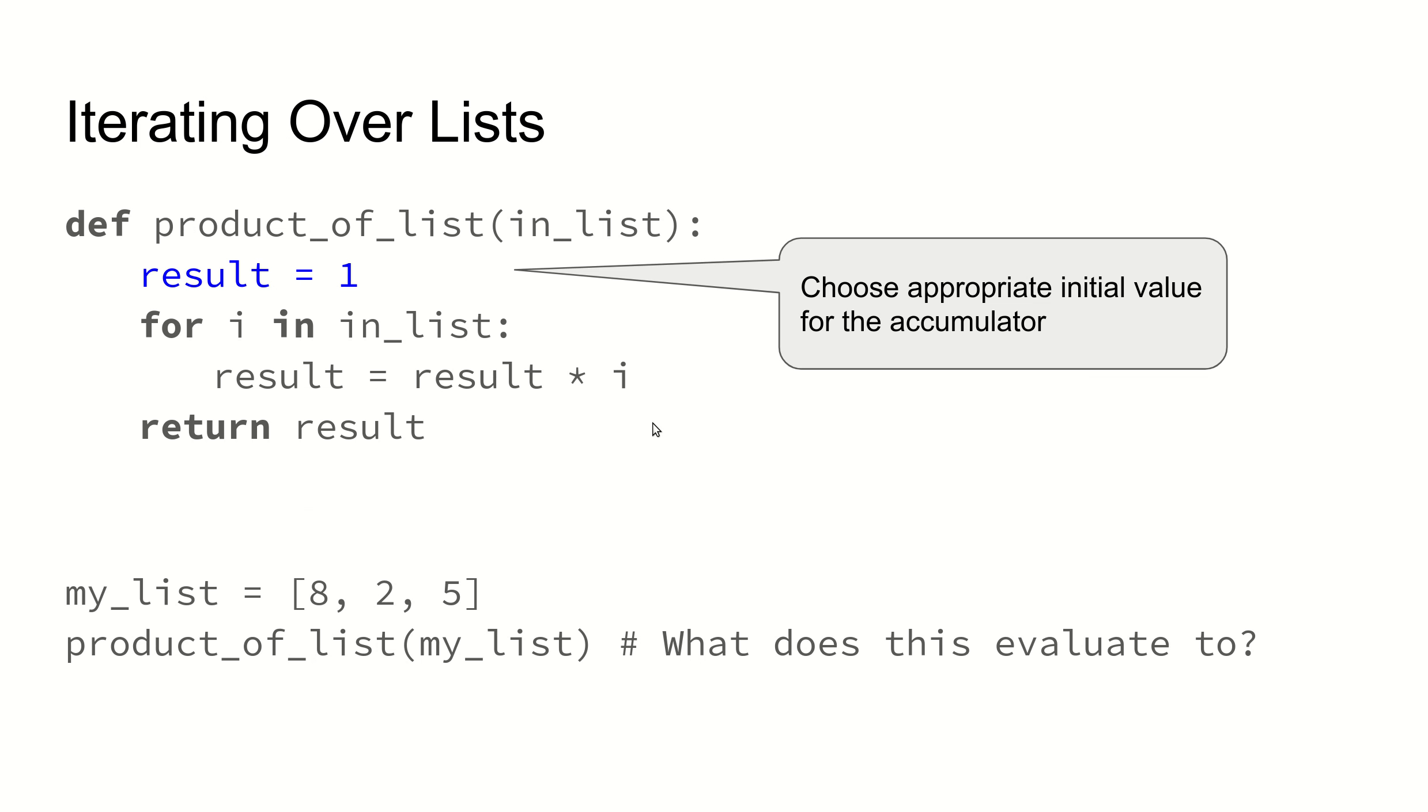Sometimes when we're looping over list items, we don't need to build a new list. For example, if we want to get the sum or the product of things that are in a list, well, the result will be a number, not a new list. So we're still doing this accumulator kind of pattern, but because what we want is a number, then our result has to be a number. Do pay attention when you're doing things like the product of some numbers or the sum or whatever kind of accumulation you're doing. It's really important to ask yourself what the starting value for your accumulator needs to be.